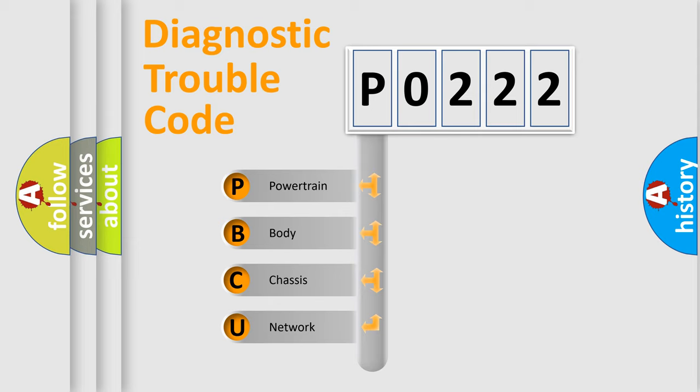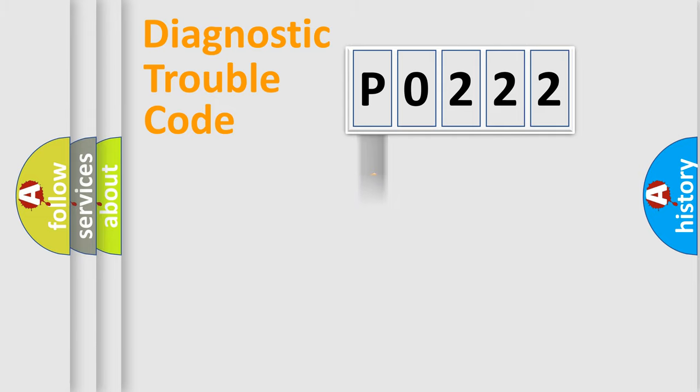We divide the electric system of automobile into four basic units: Powertrain, body, chassis, network. This distribution is defined in the first character code.